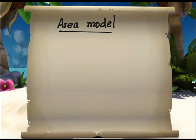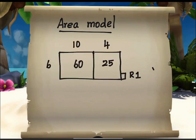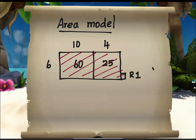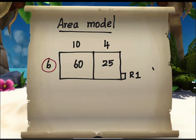With the help of distributive property, we can make an area model. The total area of the three rectangles are 85. We are dividing the total area, 85, with number 6.